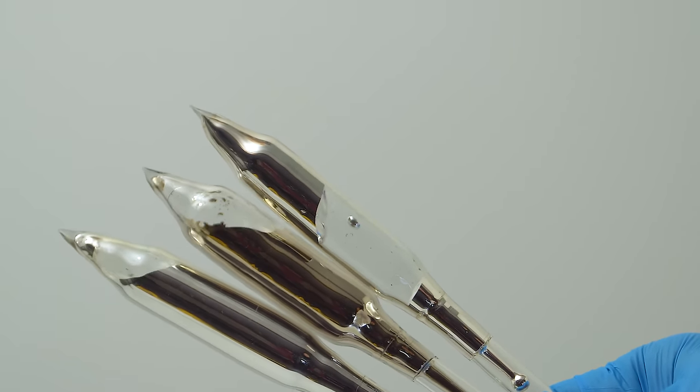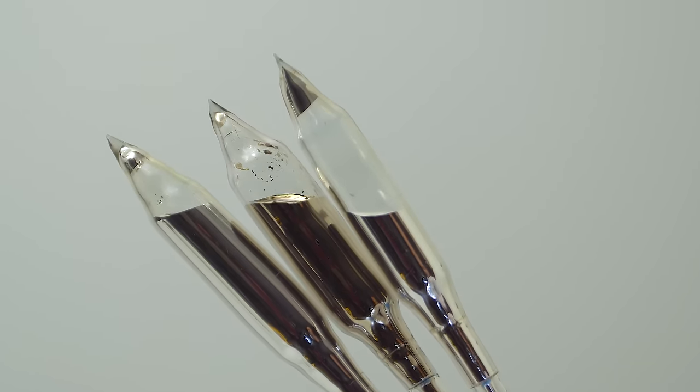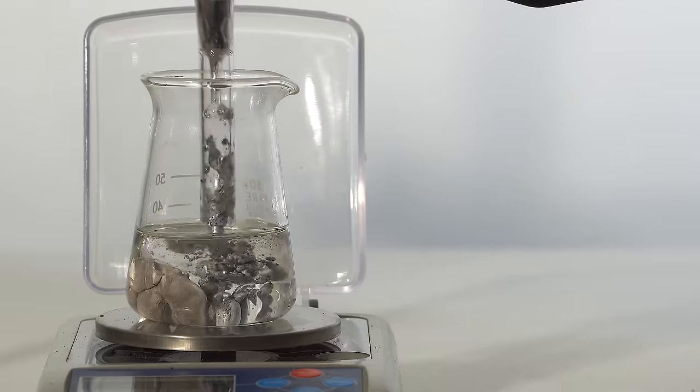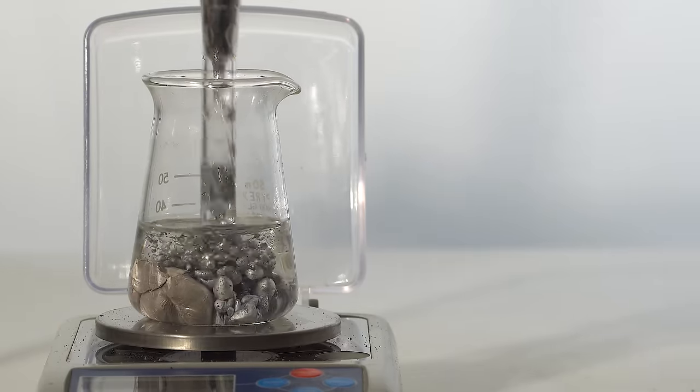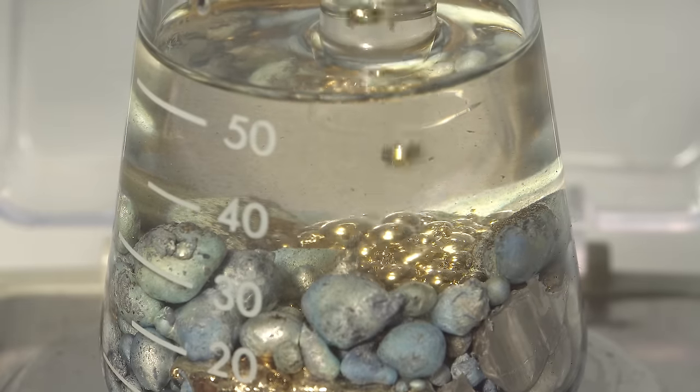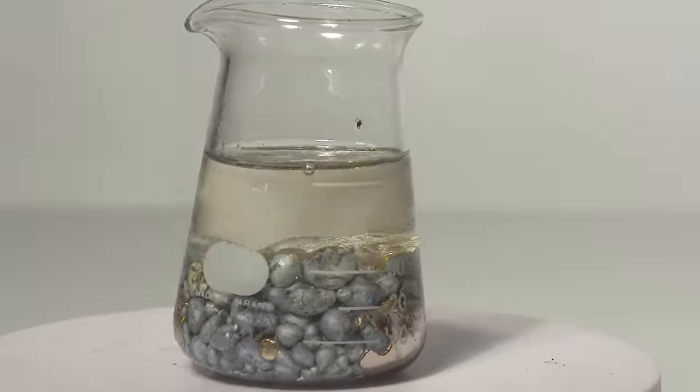In order to obtain a liquid from them, they must be either heated or mixed with each other. Now, I pour liquid cesium from the ampoule, and it's already beginning to dissolve potassium and sodium.